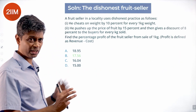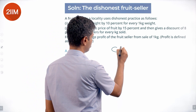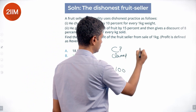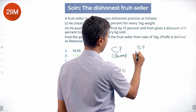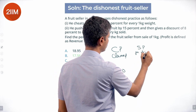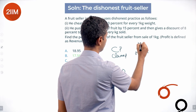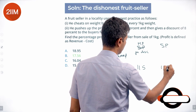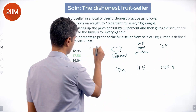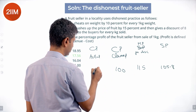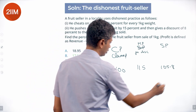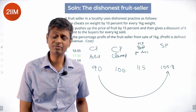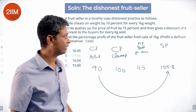Just to recap: cost price claimed = 100, marked price = 115, selling price after discount = 105.80, actual cost price = 90. From 90 to 105.80 gives the profit percentage. It's a lovely question, and far simpler if calculators were given.